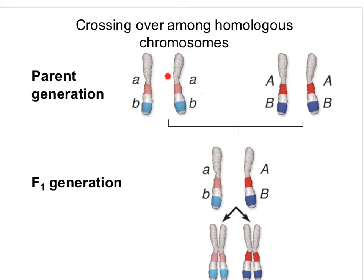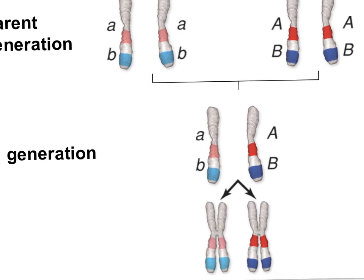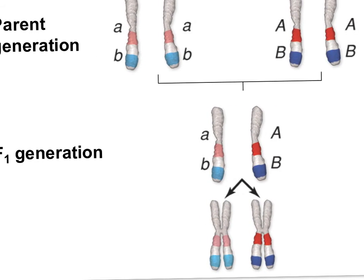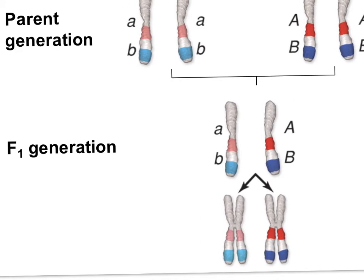Every diploid has two sets of chromosomes, and they have two copies of each allele. In this case, they're homozygous for the recessive allele of A and homozygous for the recessive allele of B. And the other parent is homozygous dominant for A and homozygous dominant for B. So let's see what happens to the offspring of these parents.